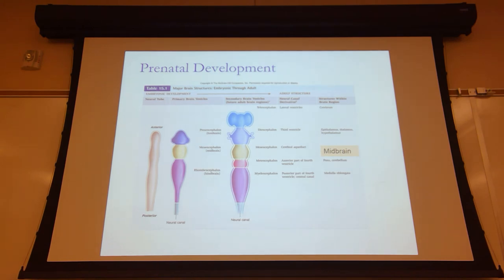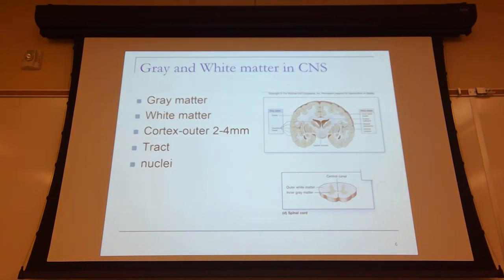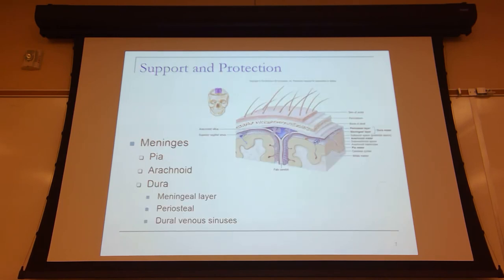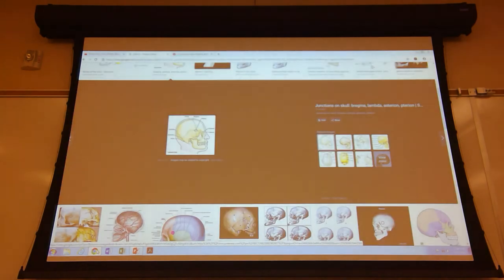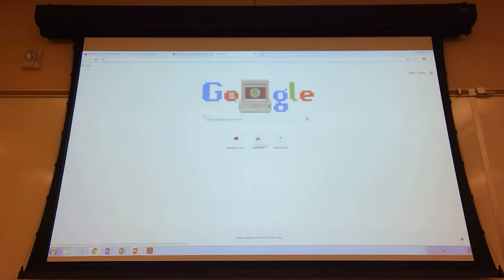I'm going to end with the video I mentioned. To review: white matter is myelinated axons; the cortex is two to four millimeters thick; tracts are axons in the CNS; nuclei are clusters of neuronal cell bodies. I already told you about the meninges. I'd rather show you a video so get your mind off your exam.